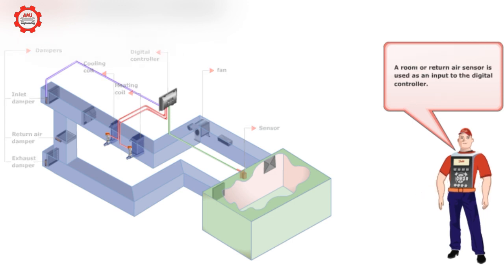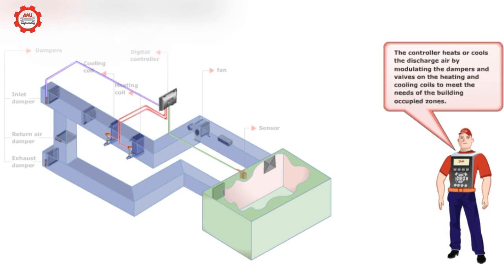A room or return air sensor is used as an input to the digital controller. The controller heats or cools the discharge air by modulating the dampers and valves on the heating and cooling coils to meet the needs of the building occupied zones.